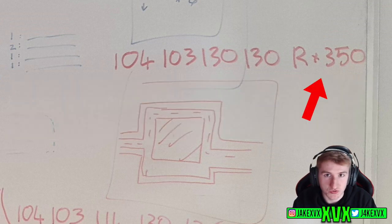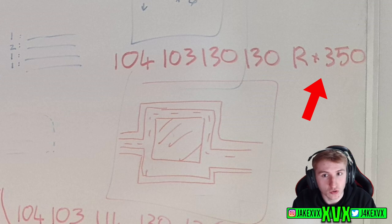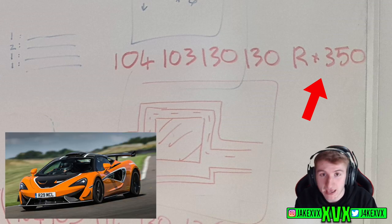Well believe it or not there were only 350 McLaren 620Rs ever made. So it says R times 350 meaning you know there's 350 of these R's and it definitely adds up with the fact that the McLaren 620R is coming in the next update because there's only 350 of them made. It all adds up I'm sure you get the idea of it.